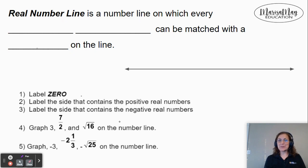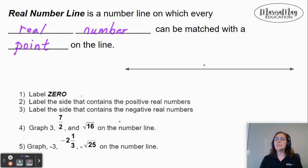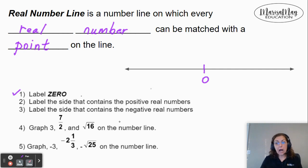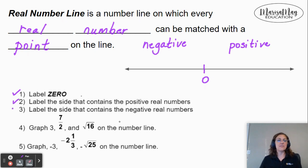Next, let's take a look at the real number line. The real number line is a number line on which every real number can be matched with a point on the line. I have a line here, and the first thing we want to do is label zero — I'm going to put it relatively in the middle. Then label the side that has the positive real numbers. The positive real numbers are always to the right of zero, and the negative numbers are always to the left. Zero is the dividing number between the positives and the negatives.